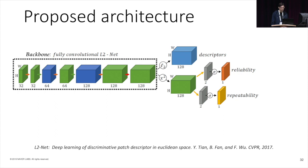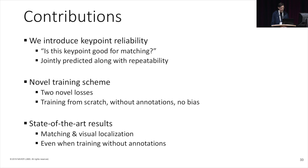To summarize, we make three main contributions. First, we introduce the notion of keypoint reliability at extraction time for the first time, which we show is well complementary to repeatability. Second, we introduce two novel losses tailored to learn these confidences from scratch and without introducing any bias. Third, we demonstrate state-of-the-art results on two standard benchmarks for matching and visual localization. Our network can be trained from scratch and obtains excellent results without even using any annotations.